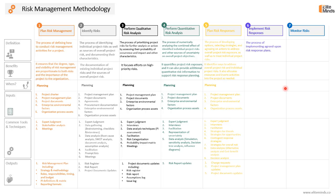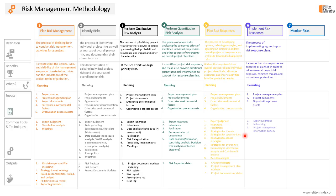Once we have the agreed-upon risk response plans, we can start the execution and implementation of those risk responses. It is the process of implementing agreed-upon risk response plans, ensuring that risk responses are executed as planned in order to address overall project risk exposure, minimize threats, and maximize opportunities. In this process, we simply execute what we planned in step five. It is part of the execution phase. Inputs include the project management plan, mainly the risk management plan, project documents like the lessons learned register, risk register, and risk report, and organizational process assets. Tools and techniques include expert judgment, influencing as an interpersonal skill, and the project management software or system used in the project. Key outputs will be change requests and updates to project documents like the issue log, lessons learned register, risk register, and risk report.